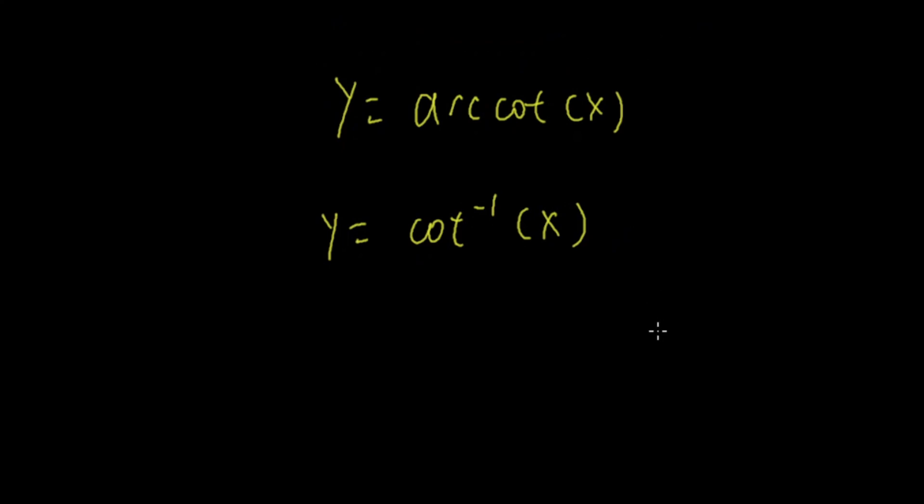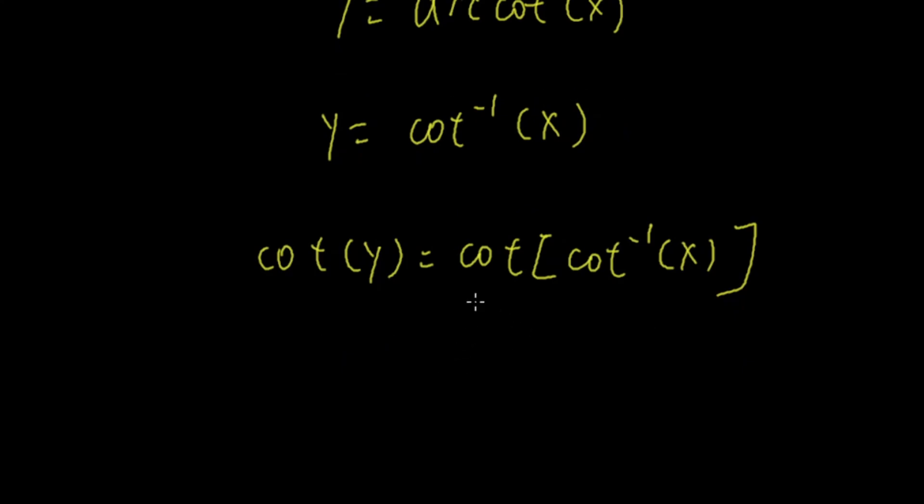Now, how do we find the derivative of cot inverse? It's not easy to find the derivative of cot inverse directly, so I will take the cot of both sides. On the left side, I have cot(y). On the right side, cot and cot inverse cancel, so all I have left is x on the right side.